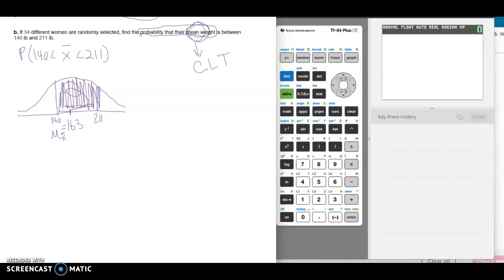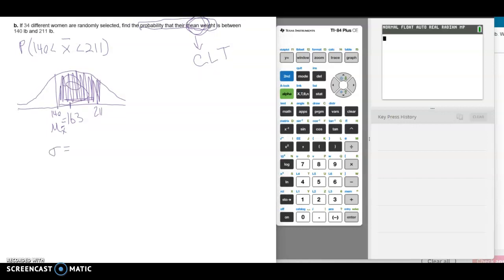But one thing that is different in this problem is the standard deviation. In this problem, in the original problem, we're told that the standard deviation is 46. Since we're finding a probability based on the mean weight here, not just individual, we're going to find sigma sub x bar. So what is the standard deviation of the sample means?